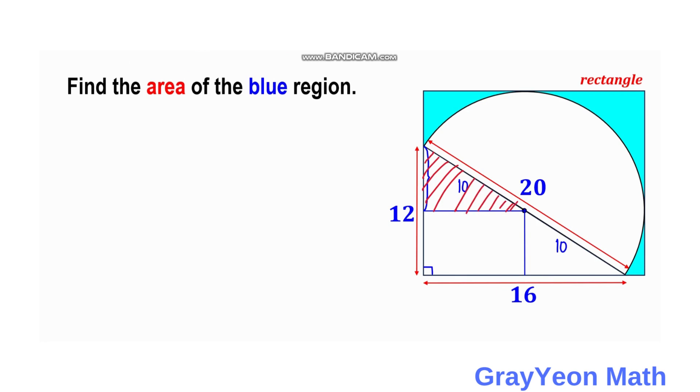We label that as a, so a over 12 is equal to 10 over 20. So a is equal to 10 over 20 times 12.